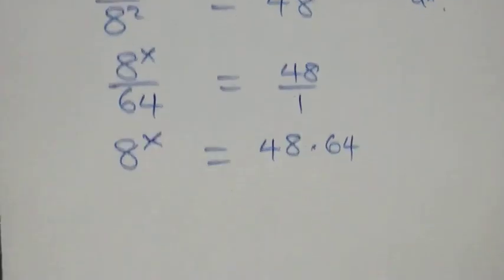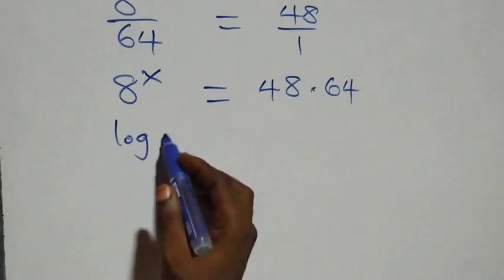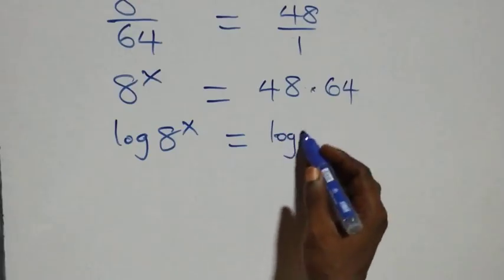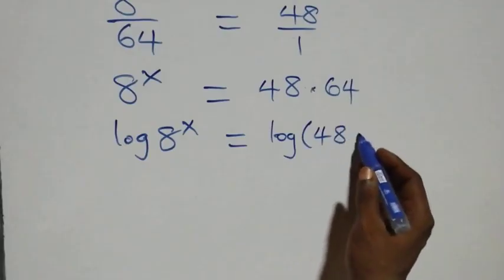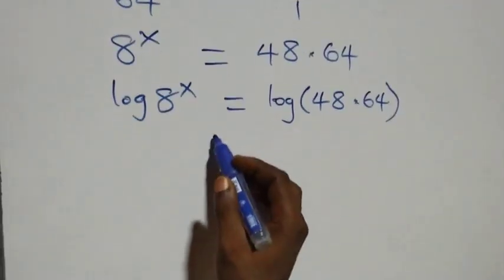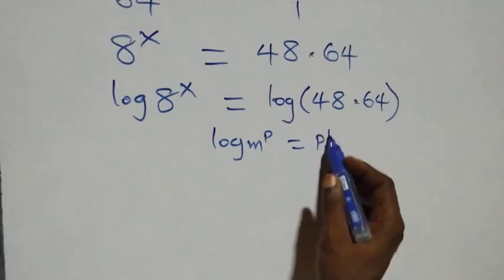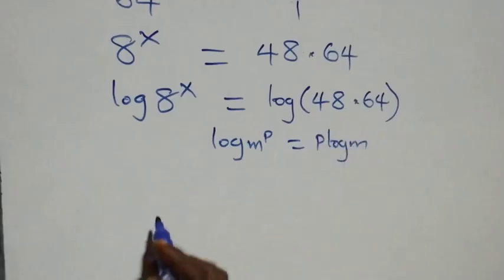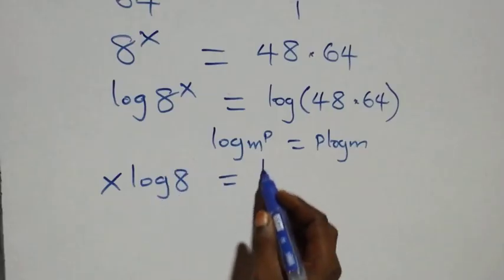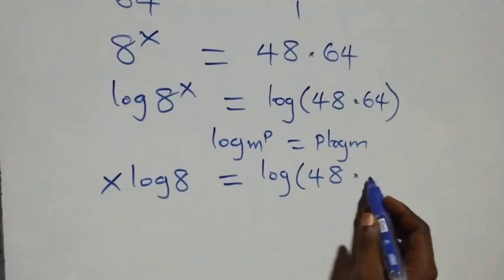Next, we take the log on both sides and we have log of eight raised to power x equals log of forty-eight times sixty-four. We then apply the power rule of logarithms — log of m raised to power p equals p times log m — so this becomes x times log eight equals log of forty-eight times sixty-four.